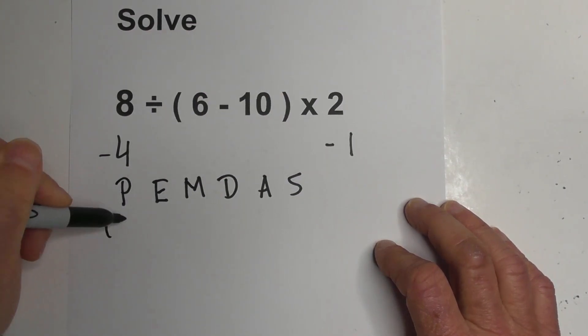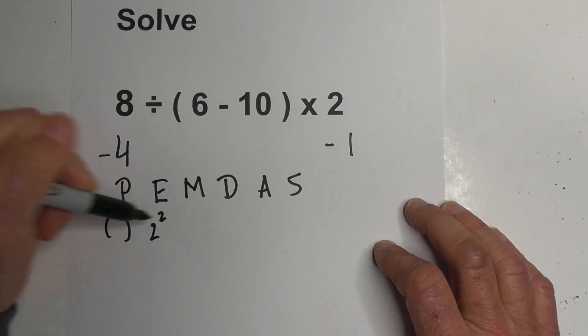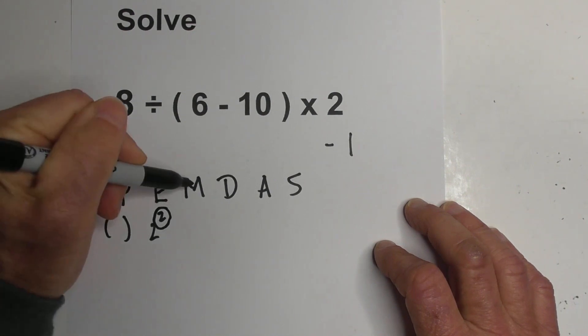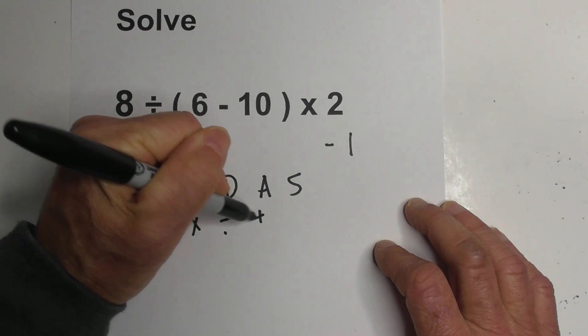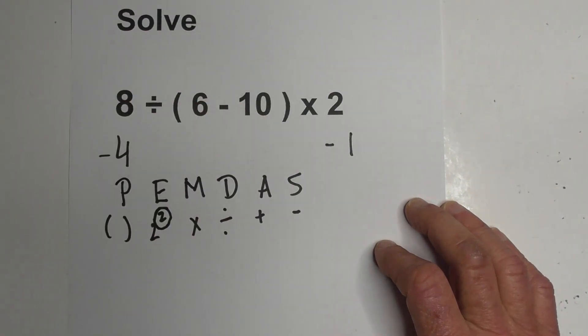The P stands for parentheses. The E is an exponent like 2 squared. Here's the exponent. We have multiplication, we have division, we have addition, and subtraction.